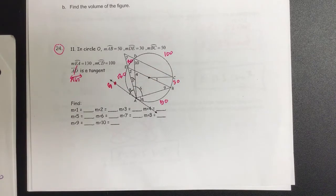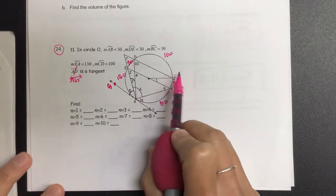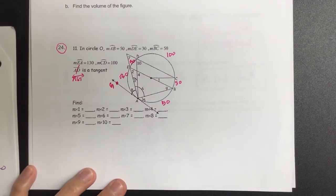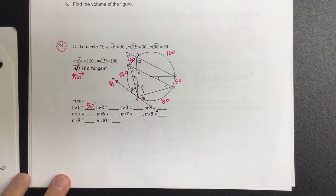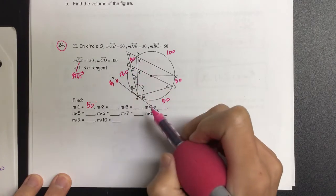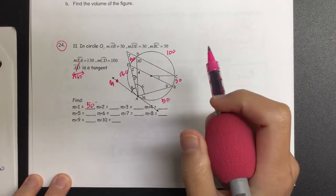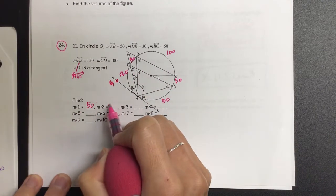So angle 1 is right here. Isn't angle 1 the central angle? Central angle is what to the arc? The same. Now let's go to angle 2. Angle 2 has vertex on the circle, meaning it is our inscribed angle. Our inscribed angle is what of the arc? Half. That's 25.